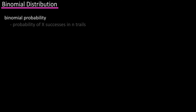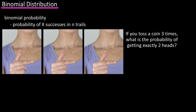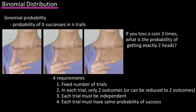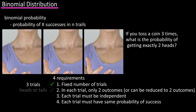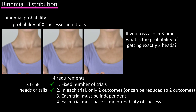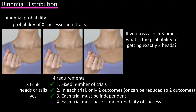Binomial probability is the probability of x successes in n trials. For instance, if you toss a coin three times, what is the probability of getting exactly two heads? Checking this problem against the binomial requirements: there are a fixed number of trials, in this case three trials; there are only two outcomes for each trial, heads or tails, and we could term getting a head as a success and a tail as a failure. The outcome of each trial is independent, as no toss has any effect on another toss, and the probability of success, getting a head, is the same for each trial.